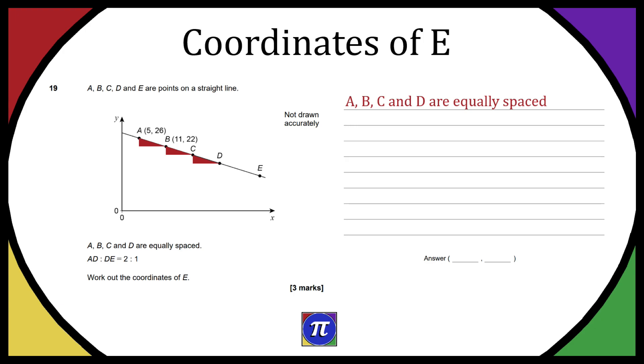They have the same gradient and to get from A to B we can see the coordinates, so we just have to add 6 to the x-axis and subtract 4 from the y-axis. I've put these triangles in and you can see the distance there, so to go between the points we add 6 to the x-axis and subtract 4 from the y-axis.